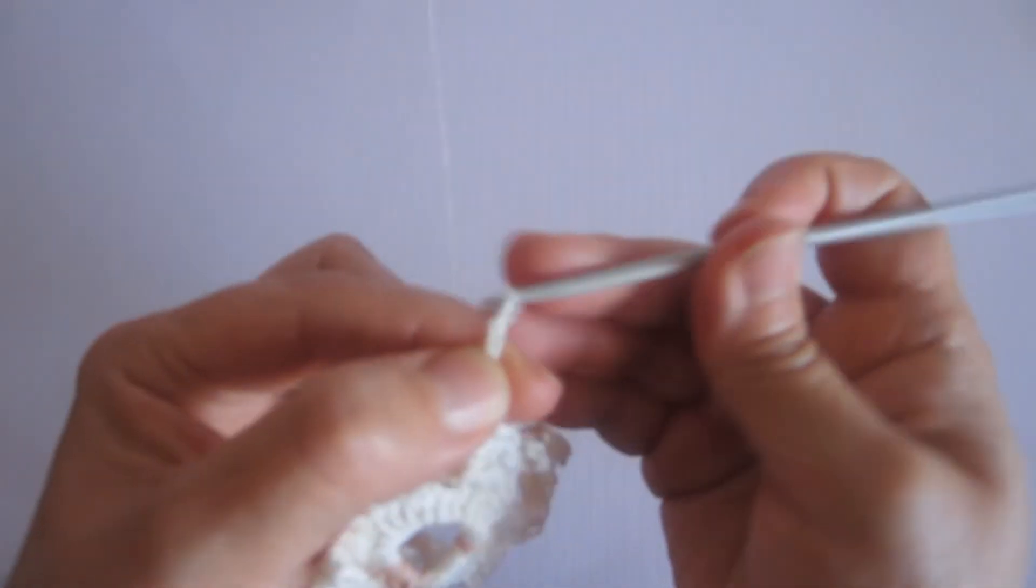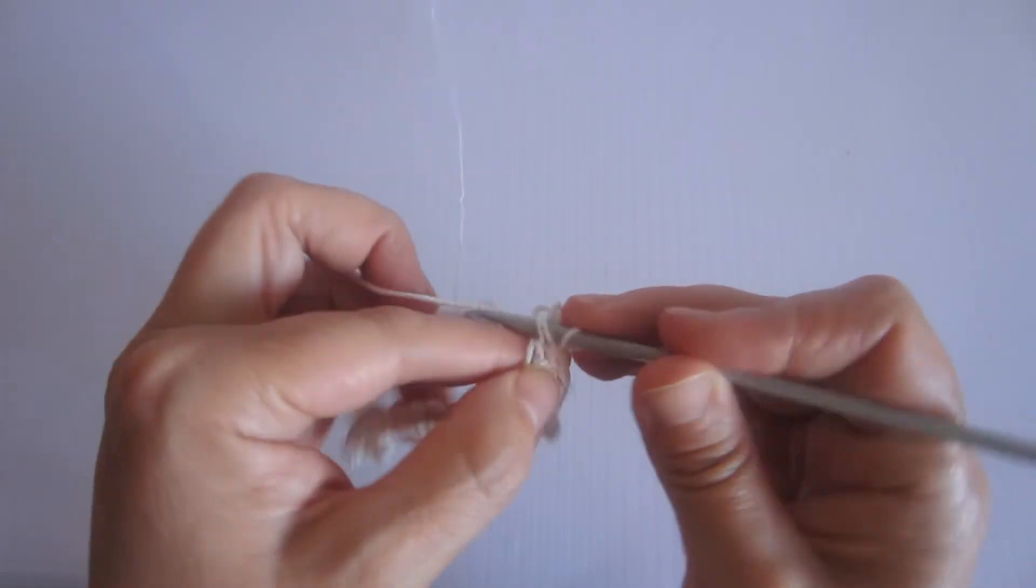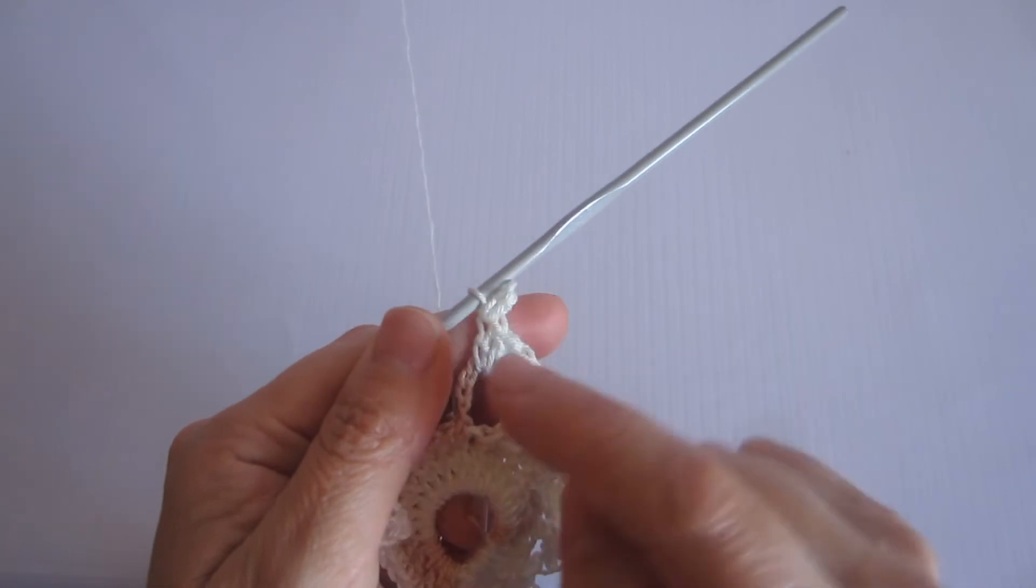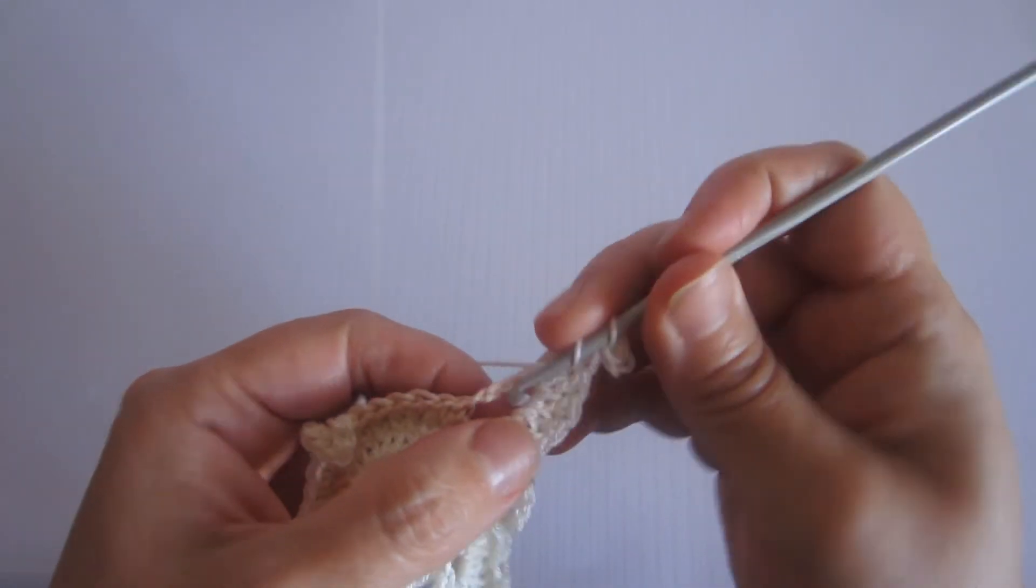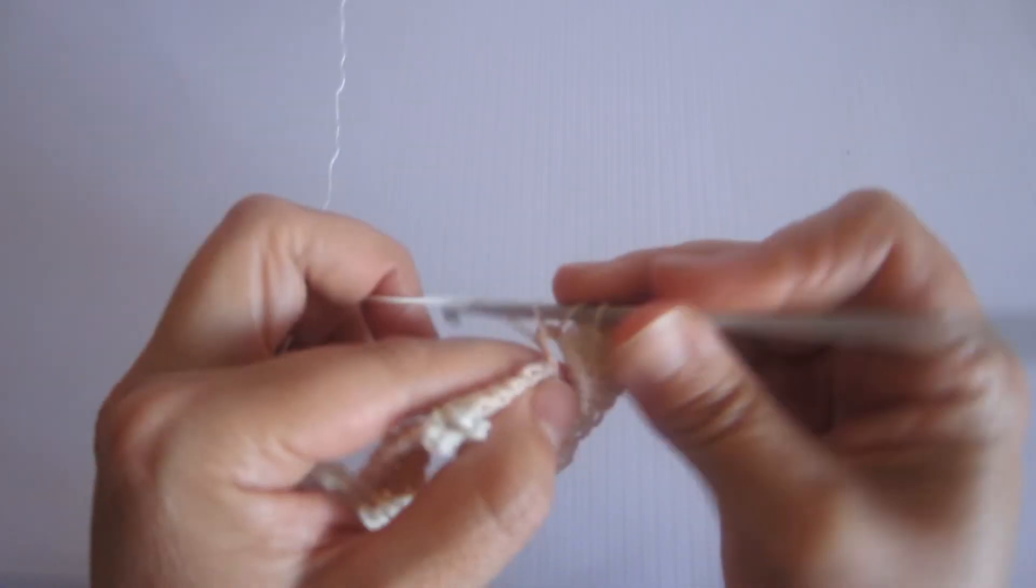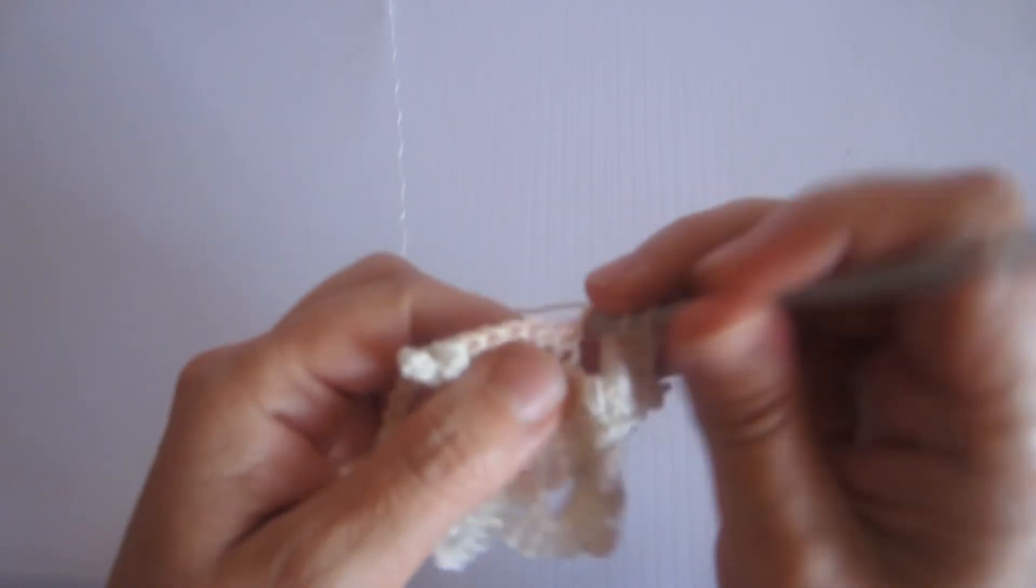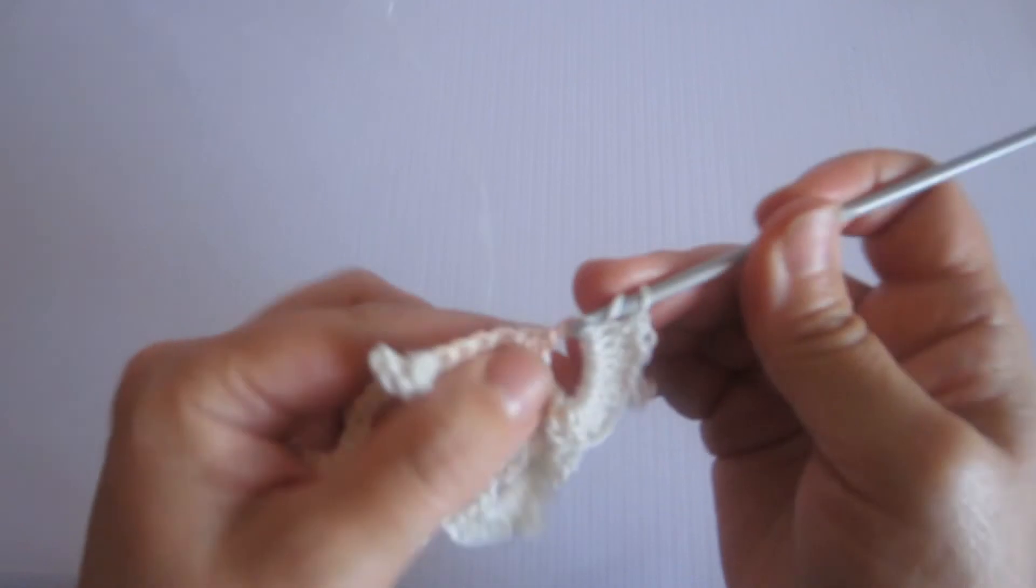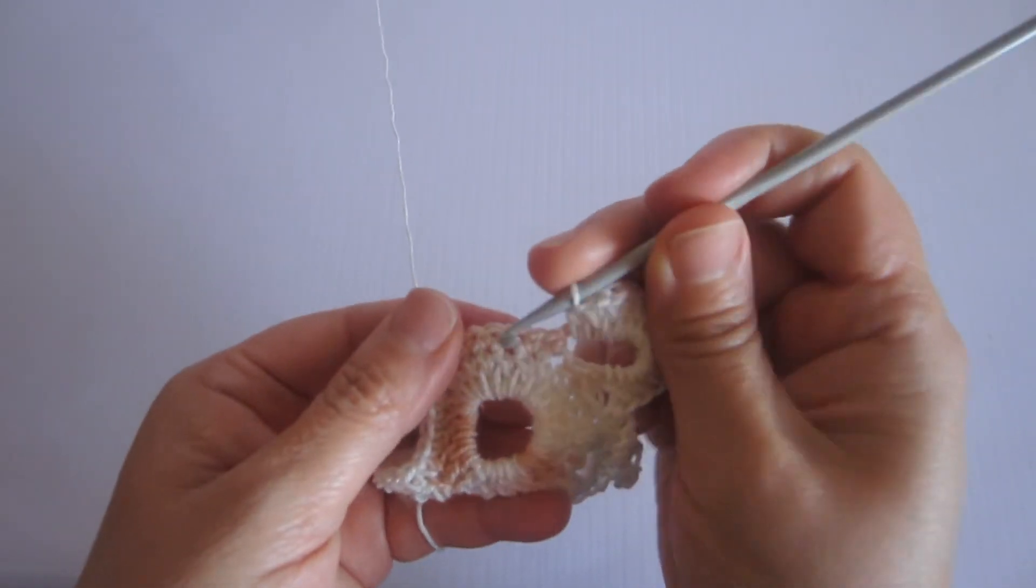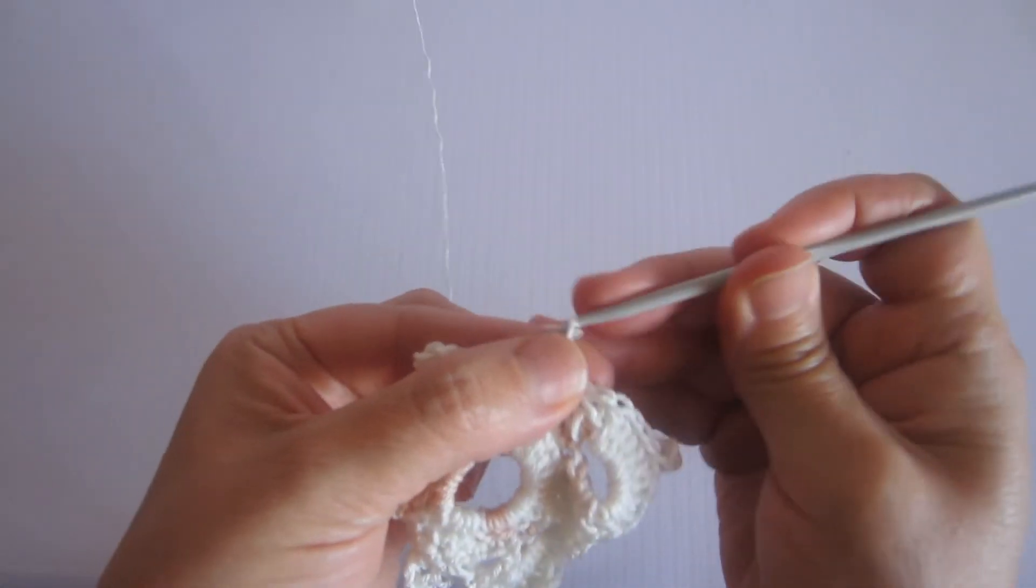Tejo 1, 2, 3 cadenitas. Me devuelvo hacia atrás. Paso el crochet, paso el crochet, paso el hilo y paso. Y miren ahí está una lagrimita y luego tejo 6 puntos altos. Voy a pasar 1, 2 y en el tercero tejo medio punto y luego 7 cadenitas.